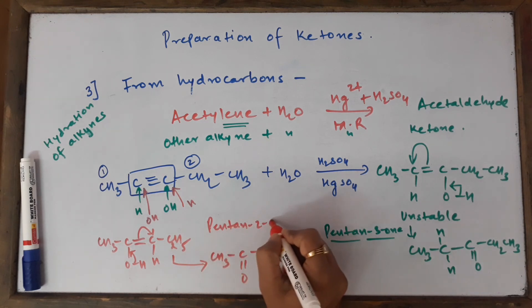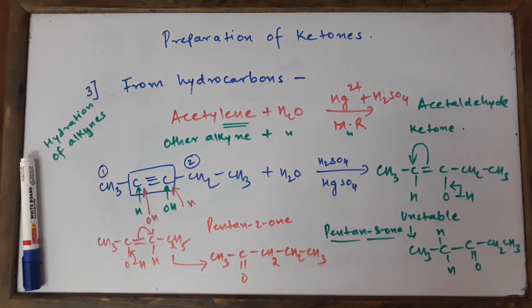We get two position isomers of pentanone because in one of the isomers the double bond O is at the second position, in another one it is at the third position. So they are position isomers because the position of the functional group is differing over here.